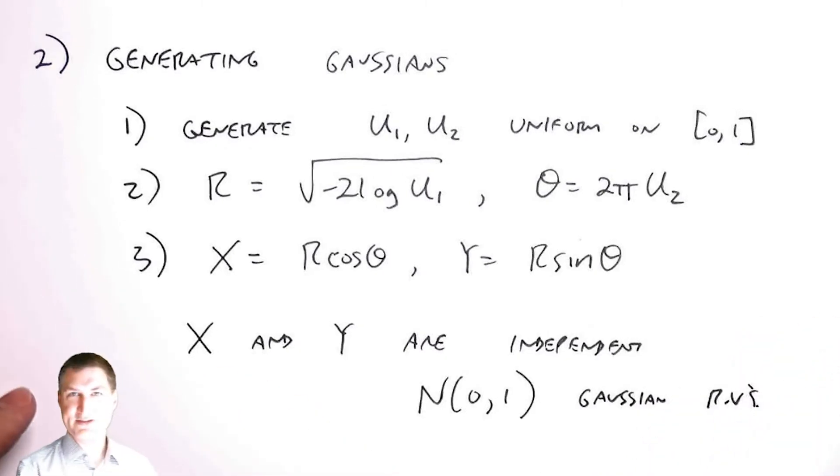That's kind of cool. If I generate two uniform random variables, I can then automatically get two independent Gaussian random variables. This is the process that I take. It's possible that something like MATLAB's randn command is doing this under the hood.